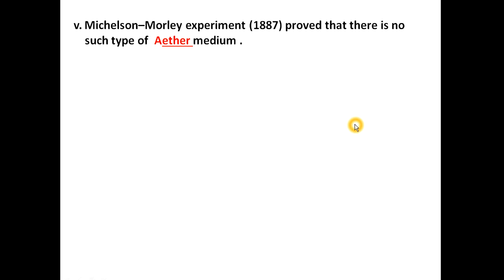However, there is a major drawback in Huygens' theory. The great scientist Michelson-Morley conducted an experiment to determine whether the ether medium is available or not. He proven that there is no such type of medium in the universe. So the assumption of Huygens that an ether medium exists was disproven by this experiment. This is the major drawback and objection against Huygens' theory.